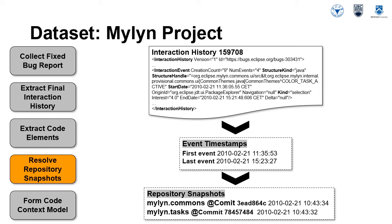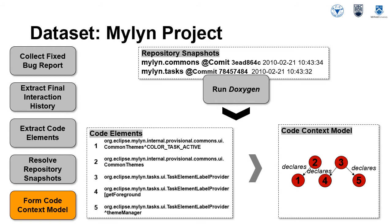Structural dependencies between code elements are not available in interaction histories. To capture structural information, we need to relate each interaction history to versions of the code active when the interaction history was collected. Thus, we firstly resolved the git repositories for extracted code elements, secondly extracted event time steps from the interaction history, and thirdly associated each working period with repository snapshots.